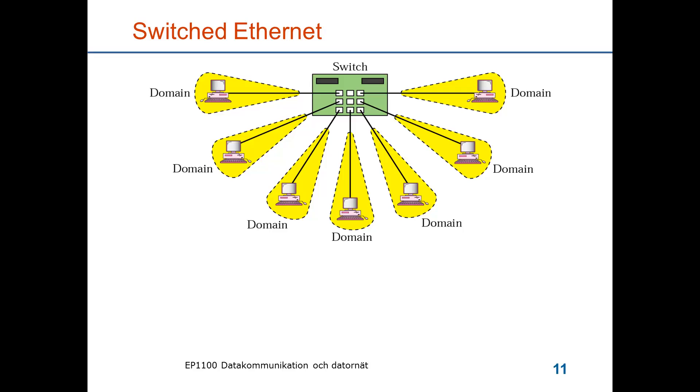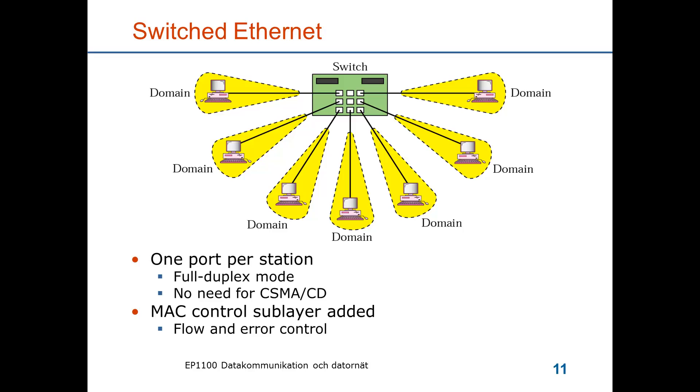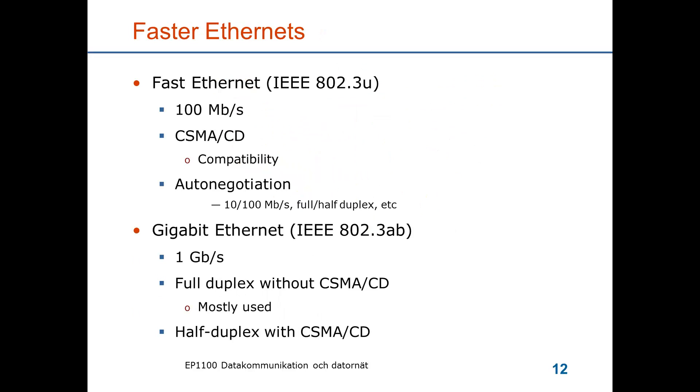Nowadays a common way of building Ethernet is by switches which means that the computers are connected to the switch by full duplex links and the switch switches frames based on the addresses. Frames destined for one and the same output are buffered and there is no collision in this system. So there is no MAC protocol any longer. There is a control sublayer added for flow control and error control in this protocol.